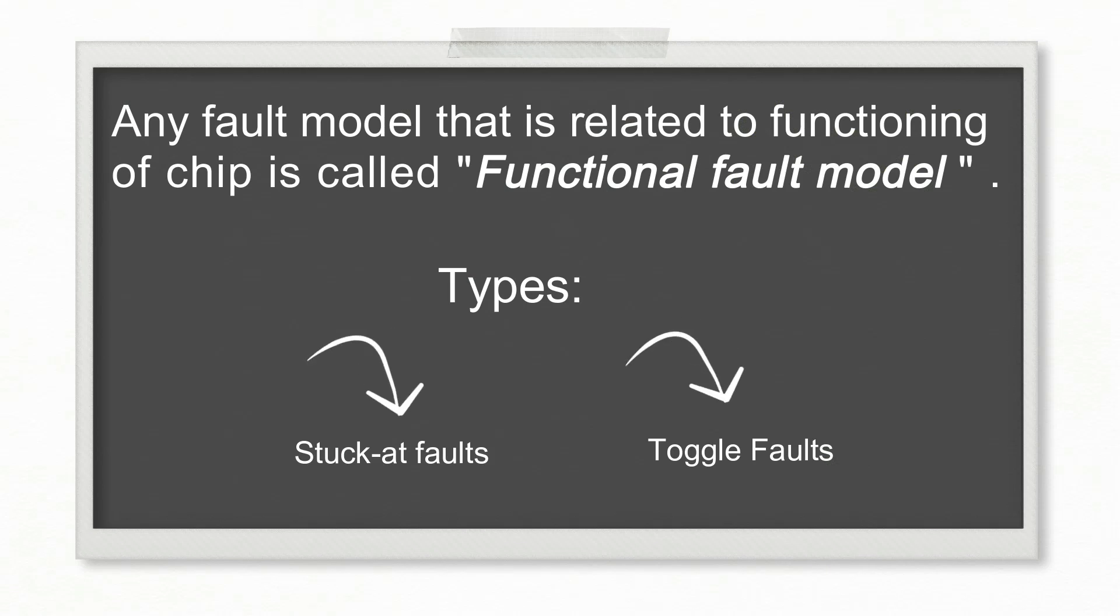Let's start with functional fault model. As told earlier, a fault model that is related to functioning of a chip is called functional fault model. There are two types of functional faults. First is stuck-at fault. Second is toggle fault.